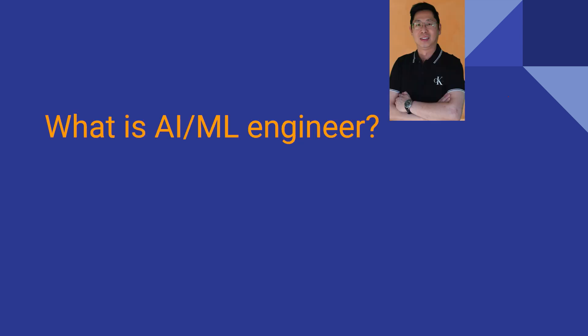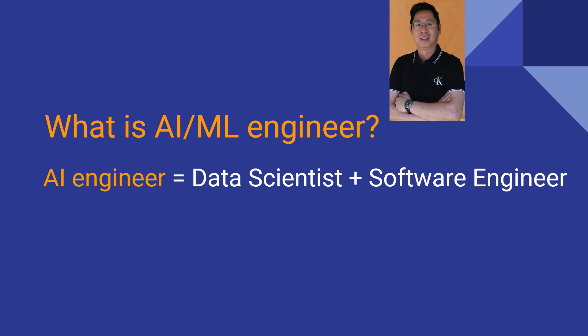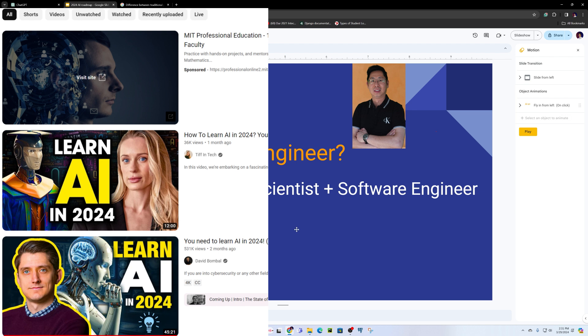What is an AI ML Engineer? An AI engineer is equal to a data scientist plus a software engineer. The combination of software engineering and data science skills is what makes the AI engineer, also known as the ML engineer.